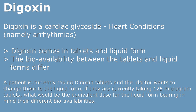Digoxin comes in tablet and liquid form, and the point you need to remember here is that the bioavailability between the tablets and liquid forms differ. Examiners love to throw in a calculation question or two — for example: a patient is currently taking digoxin tablets and the doctor wants to change them to the liquid form. If they are currently taking 125 microgram tablets, what would be the equivalent dose for the liquid form, bearing in mind their different bioavailabilities?